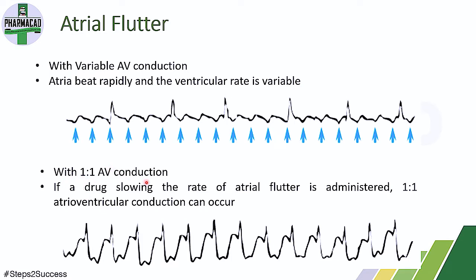The second type is atrial flutter with 1:1 AV conduction. Here, the atrial beating rate is fast, and in the same proportion the ventricular beating rate is also increased — so there is a 1:1 ratio. If a drug slowing the rate of atrial flutter is administered, 1:1 atrioventricular conduction can occur, which is at least better than variable AV conduction. The drug is given first to achieve 1:1 AV conduction before further control.